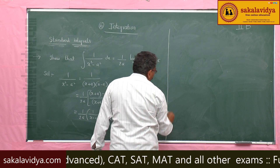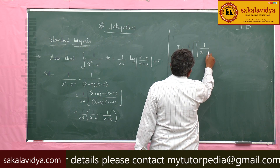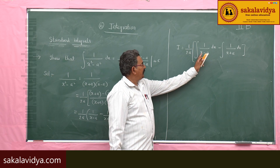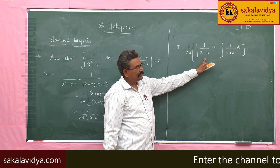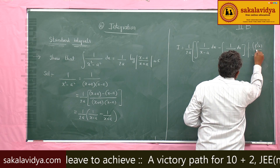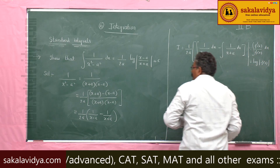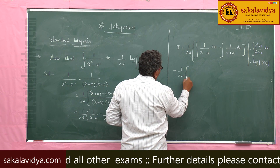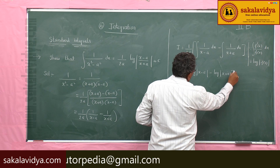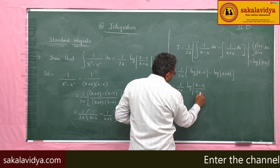The integral I = (1/2a)∫[1/(x − a) − 1/(x + a)] dx. The derivative of (x − a) is 1 and of (x + a) is also 1, so using f'(x)/f(x) → log|f(x)|, this equals (1/2a)·log|(x − a)/(x + a)| + c.